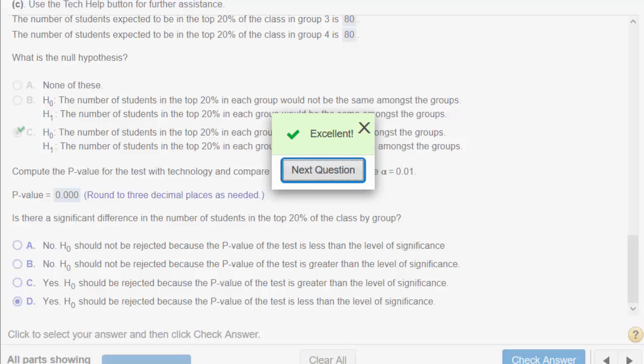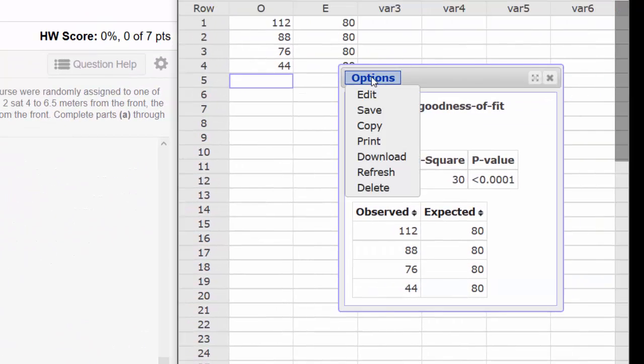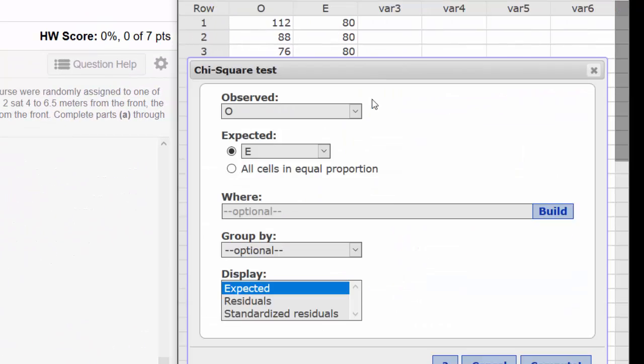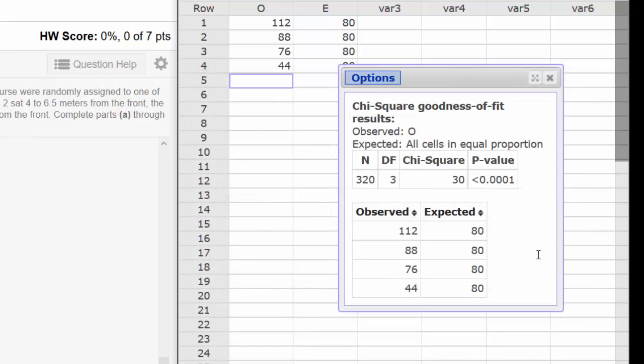One last thing in StatCrunch before I let you go. If I come back to options and edit, instead of typing those 480s, I could have used all cells in equal proportion and click compute and I get the same exact results. Thank you.